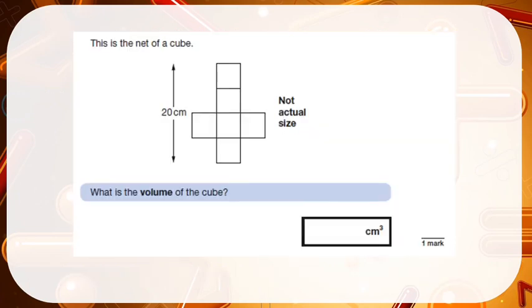Let's have a look at some SATs questions that you might get about volume. The first question tells you that you have the net of a cube — basically the cube flattened — and then asks you to find the volume of the cube. The first thing I would do is recognise that my cube going down the middle is split into 4 squares.